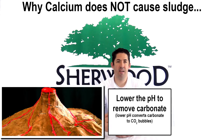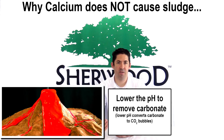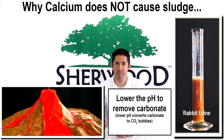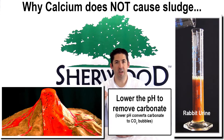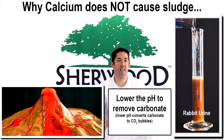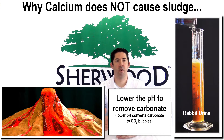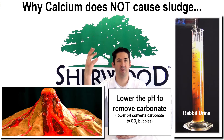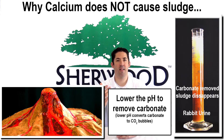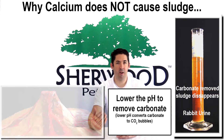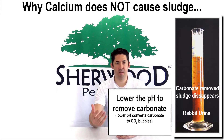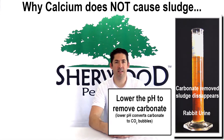If you add vinegar to fresh rabbit urine to lower the urine pH, it will actually react in the exact same way, where the carbonate will convert over to carbon dioxide and bubble out of solution, leaving the calcium behind dissolved in the urine, and it goes clear — meaning it's not a precipitate. There's no sludge anymore.